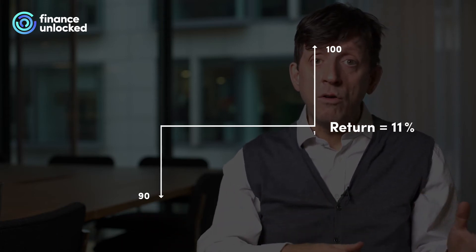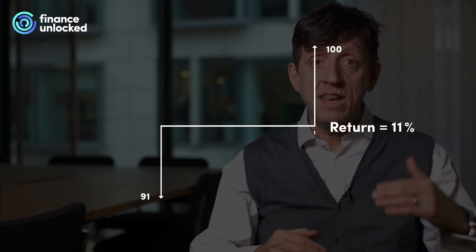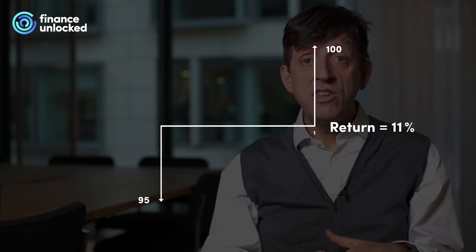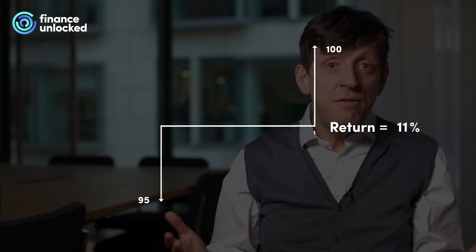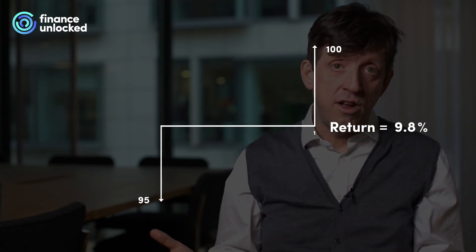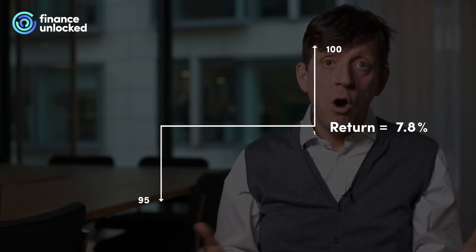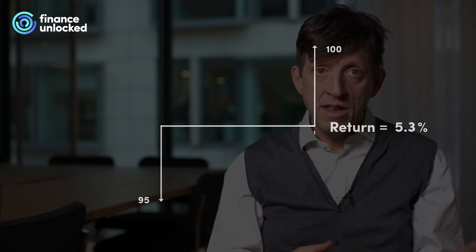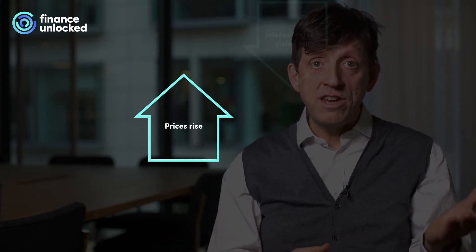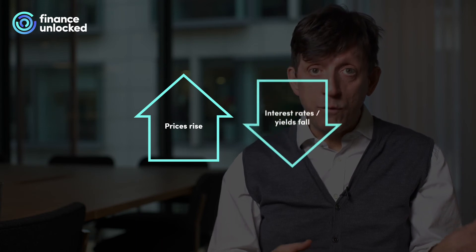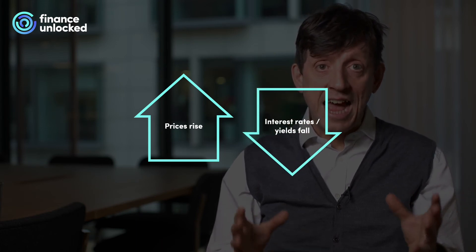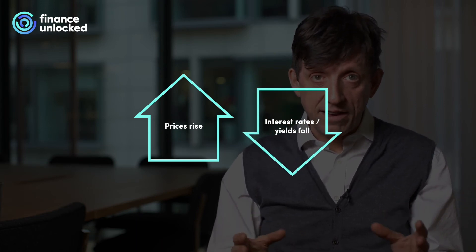If the price of the bond rises from 90 to 95, then the return now is only 5 on 95, or about 5.3%. As the price rises, the interest rate or yield falls, given that the cash flows are fixed.